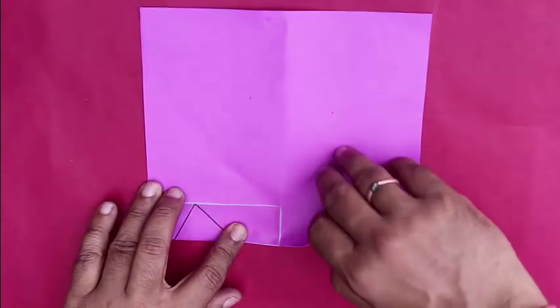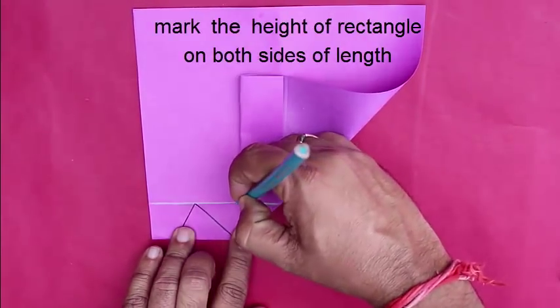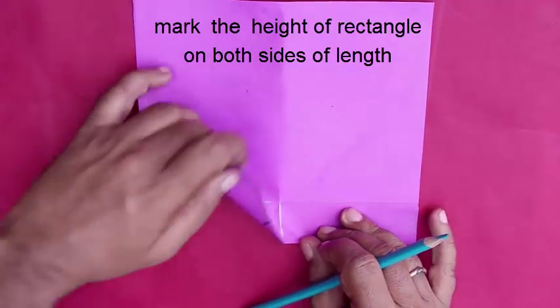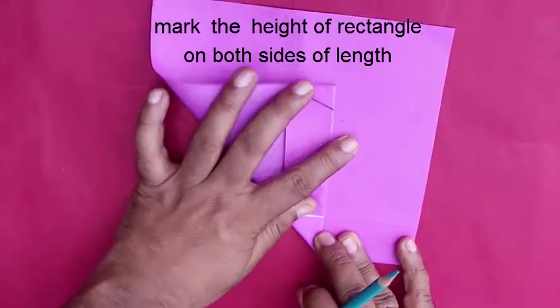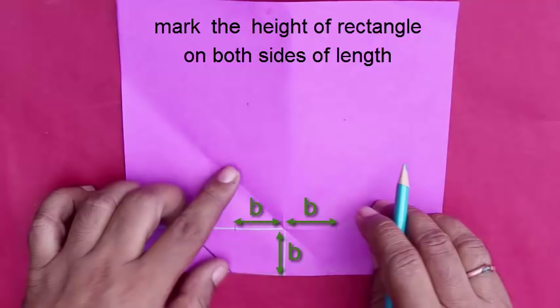For that, we will first fold the height and mark two points b distance away from one of the corners of the rectangle. Now we will draw two vertical lines from these points.